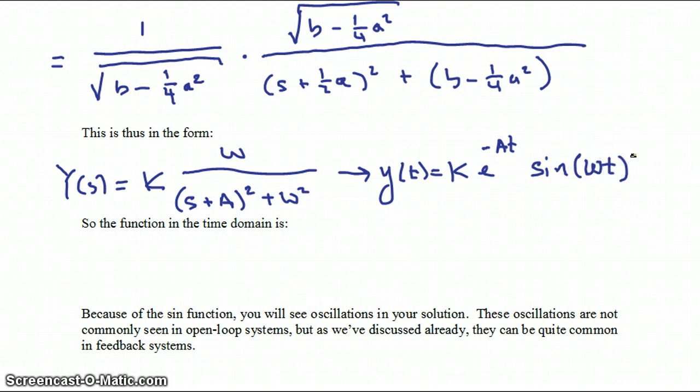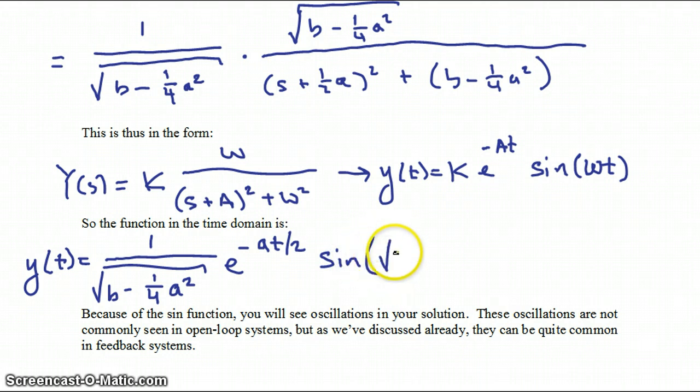So taking what we have in the previous line and inverting that back into the time domain, we get Y of T is equal to our constant out front. Now it just happens to be 1 over omega, but it doesn't have to be. But in this case it was. So we get our constant out front times E to the minus little A T over 2 because the capital A here was little A over 2 times the sine of our omega times T.